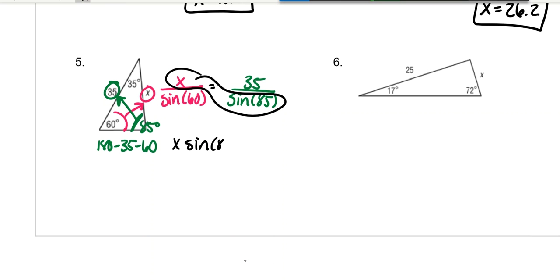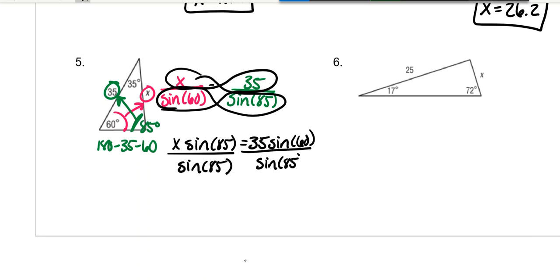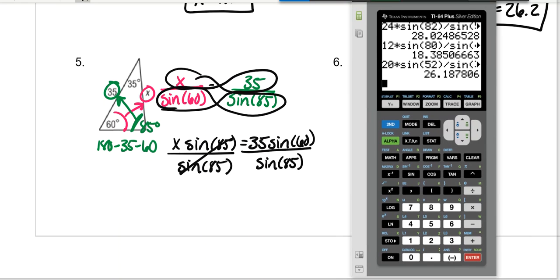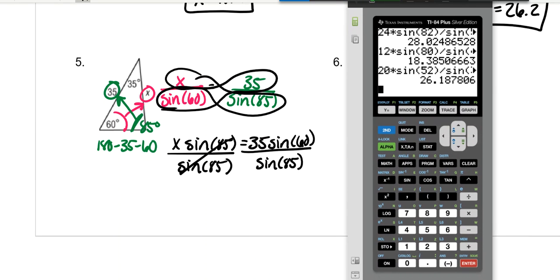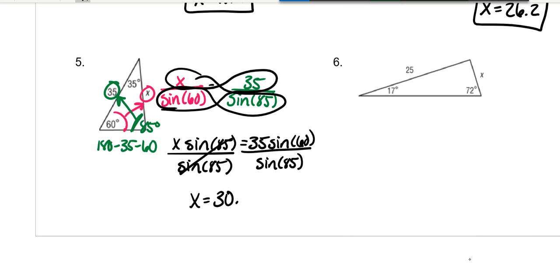X times the sine of 85 is equal to 35 times the sine of 60. Divide both sides by the sine of 85. So we have 35 times the sine of 60 divided by the sine of 85, which is 30.42. So X is 30.4.